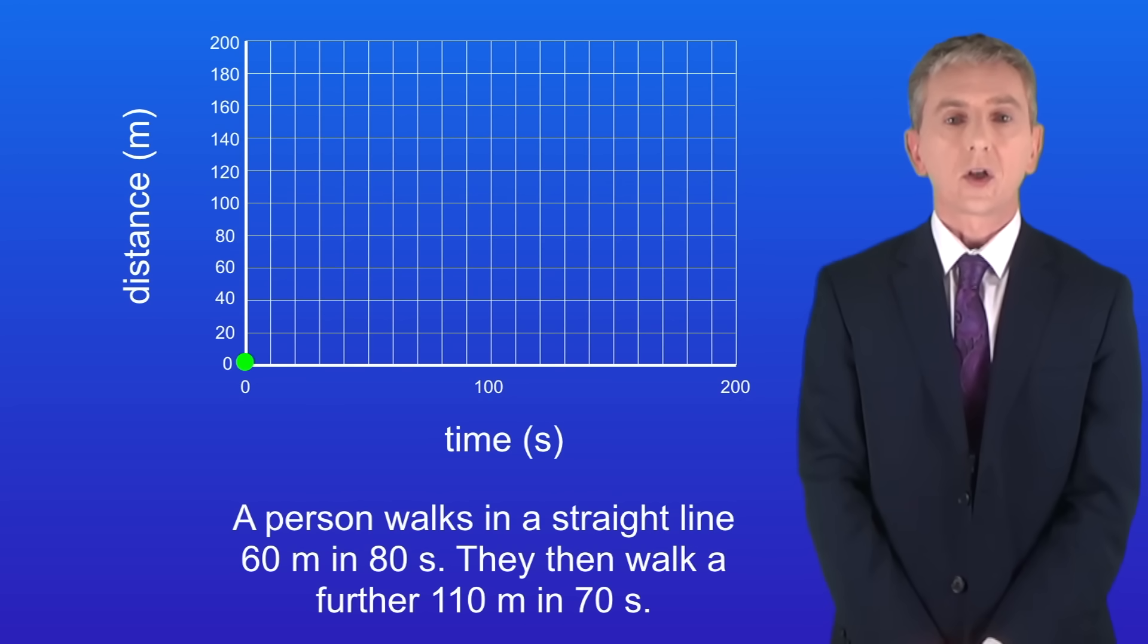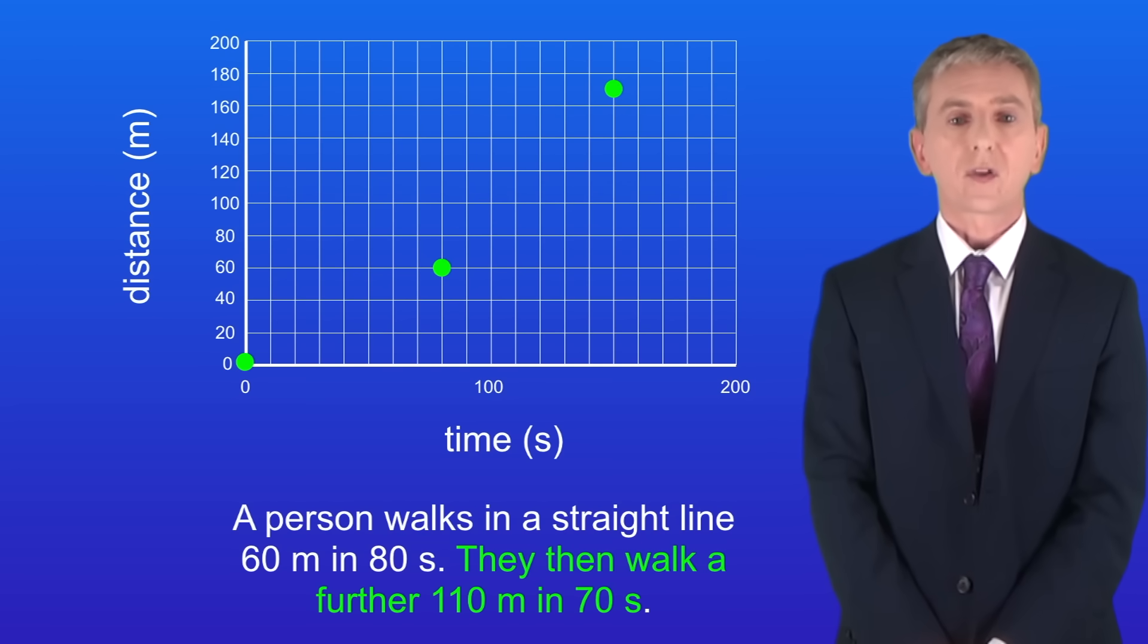Okay we start by placing a dot at 0 meters and 0 seconds. We then place a dot at 60 meters and 80 seconds and this represents the first part of the journey. Now we place a dot 110 meters further along the distance axis and 70 seconds further along the time axis like this. This represents the second part of the journey. And finally we connect the dots with lines.